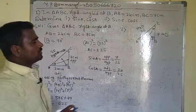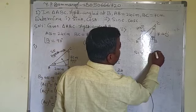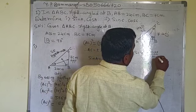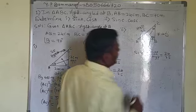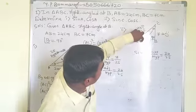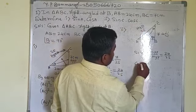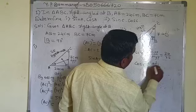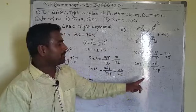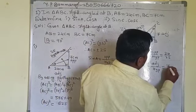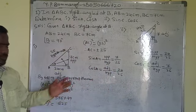So sine C = opposite divided by hypotenuse = 24/25. For cosine C, adjacent divided by hypotenuse — the adjacent side is BC = 7, so cosine C = 7/25. Hence the required values for both angles A and C are found.